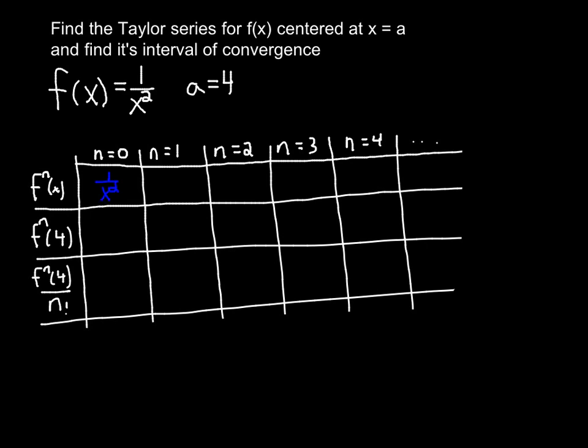The first derivative of that is negative 2 over x cubed. The next derivative would be positive 6 over x to the 4th. I'm thinking about each of these as x to the negative exponent and mentally taking the derivative.